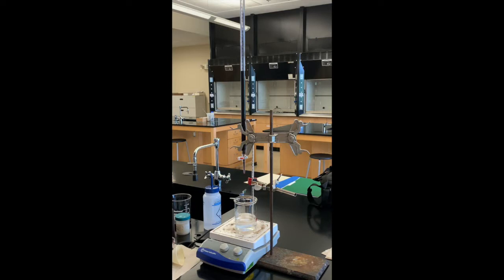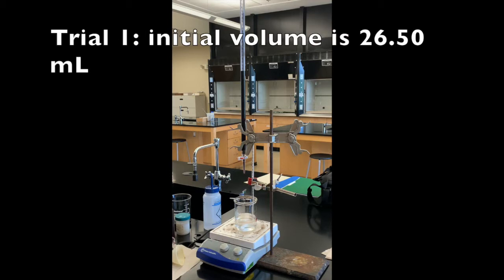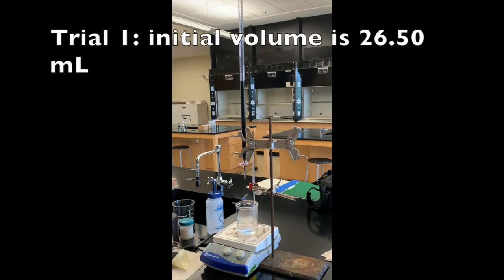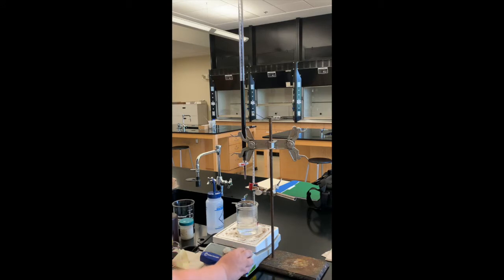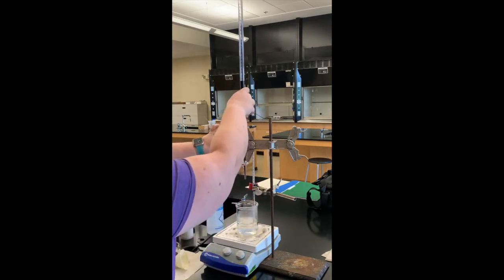I'm going to still heat this one up to about 60 degrees before I start titrating. So our initial volume for trial one on Part C will be 26.50. Our initial volume is 26.5 milliliters. Our solution is about at 60 degrees, so it's ready to start titrating.